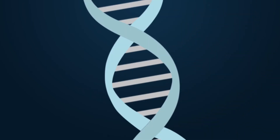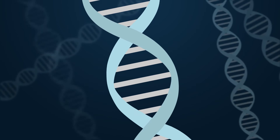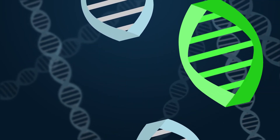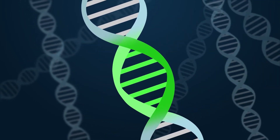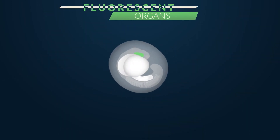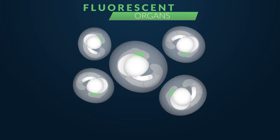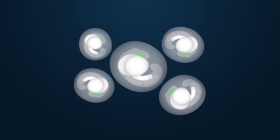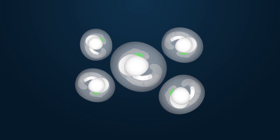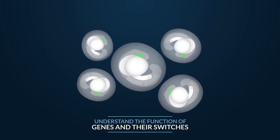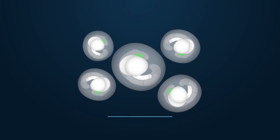Because we know the zebrafish genome sequence, researchers can create genetic changes in specific genes, or the switches that turn them on and off, which are known to be involved in human birth defects. We can even create zebrafish embryos that have fluorescent organs to study more easily how a genetic change impacts development using microscopy.